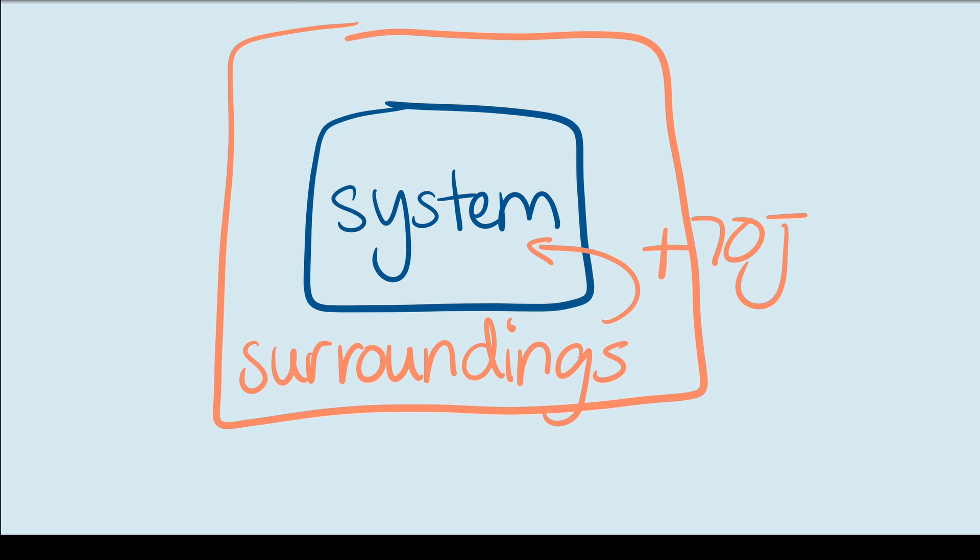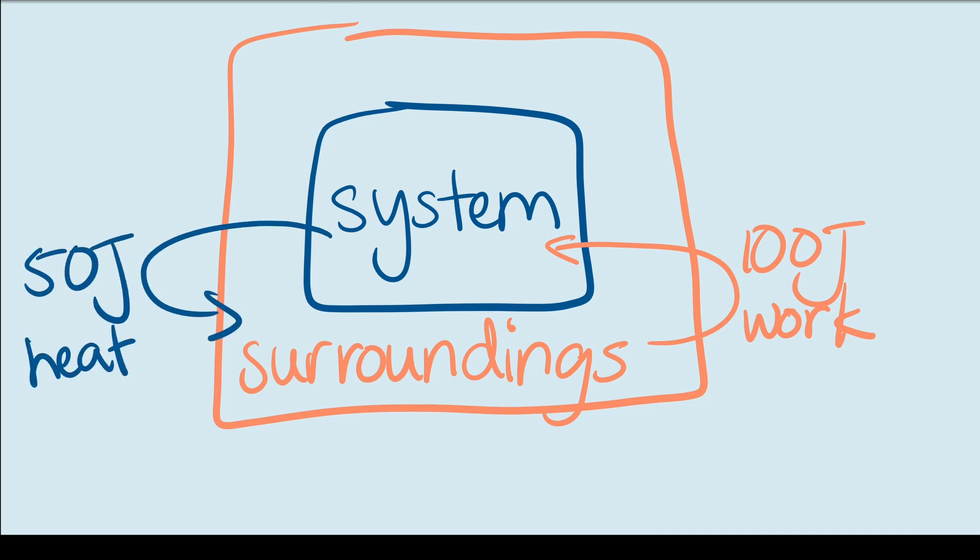That's also pretty easy. Now, here's where it gets harder. Let's say the surroundings do 100 joules of work on the system. But then the system loses 50 joules to the surroundings in the form of heat. Now what's the change in internal energy? Well, from the work alone, we can say that the system gained all 100 joules of energy because work was done on the system. So we would say that it gained 100 joules.